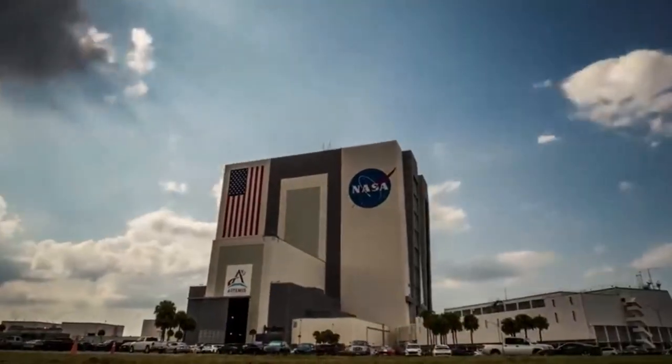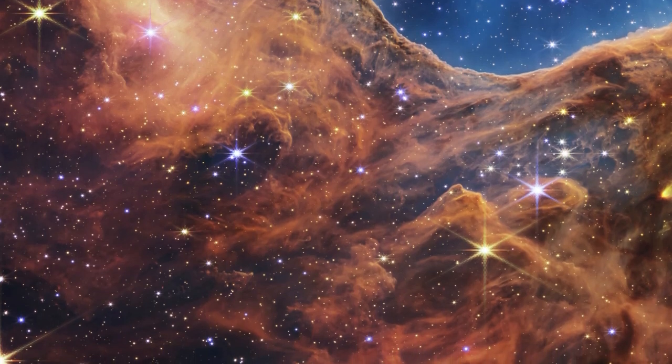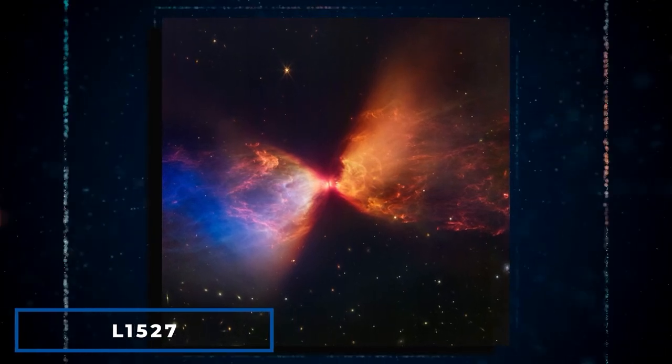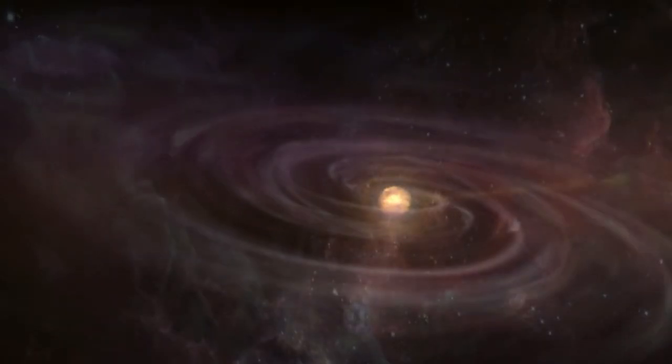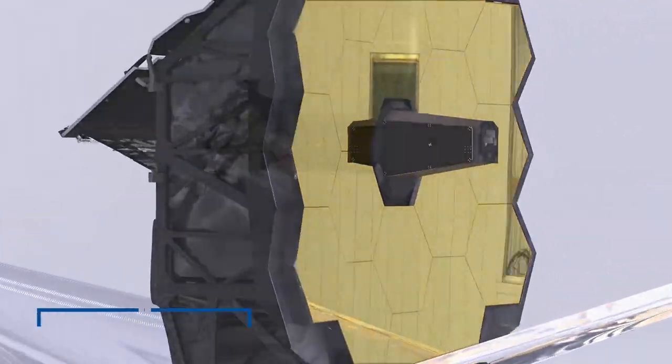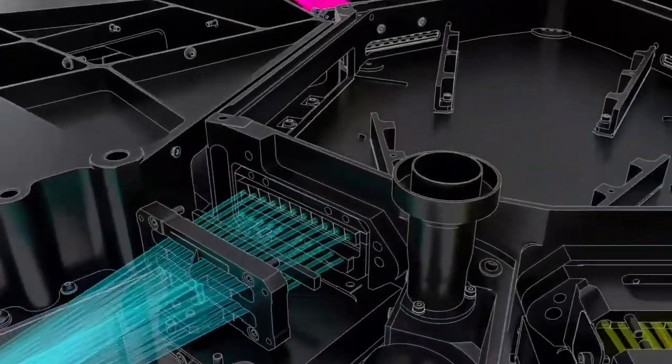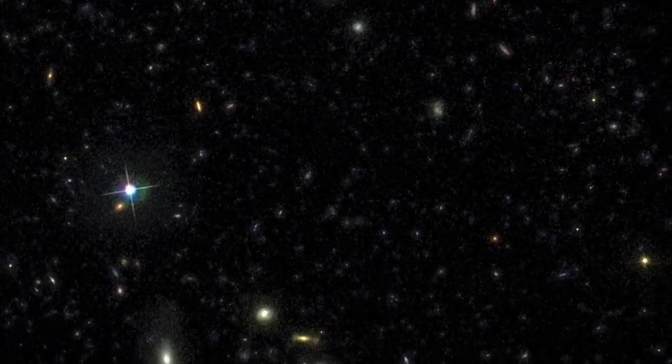And NASA has unveiled another astounding image captured by the JWST, showcasing a fiery galactic hourglass. This remarkable image portrays the dark cloud nebula L1527, within which a protostar is taking shape, marking the nascent stages of a new star's formation. The image, acquired by the JWST's NIRCam, presents the invisible and near-infrared wavelengths of light translated into visible colors, composing the image's elements.